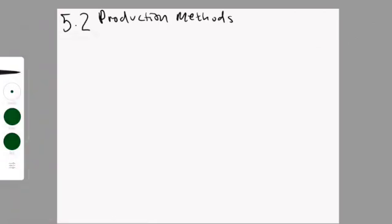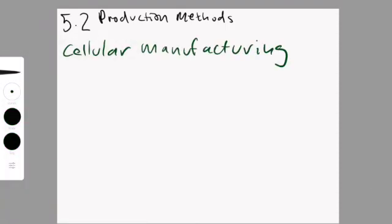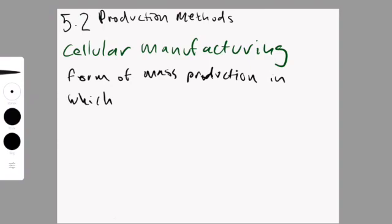The last type is cellular production or manufacturing. Essentially this is splitting the flow of production into self-contained groups that are responsible for each task or each unit. You're essentially doing mass production except there are teams. You are working in teams.